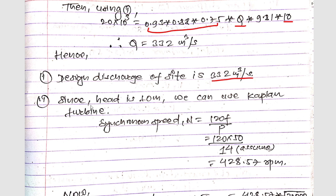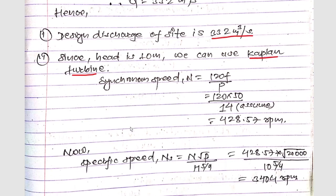The design discharge of the site is 332 m³/s. Since the head is 10 meters, we can use Kaplan turbine here.